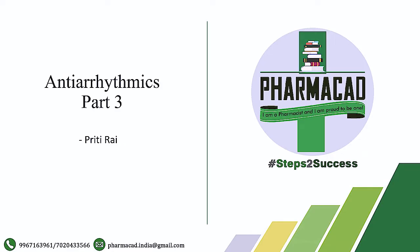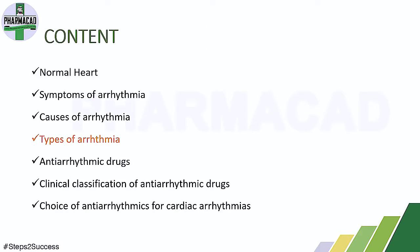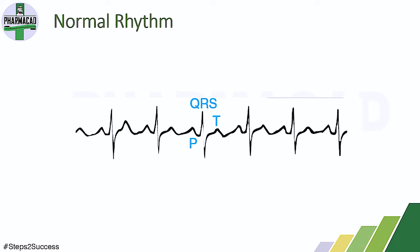In this part of antiarrhythmics, we will see the types of arrhythmia based on their features appearing on electrocardiograms. We will see seven types of cardiac arrhythmia and how each appears on the electrocardiogram.